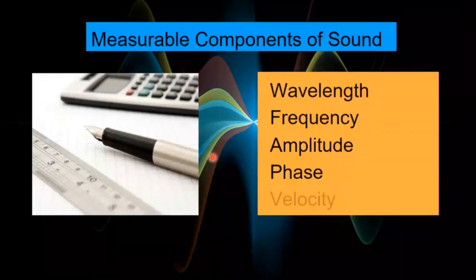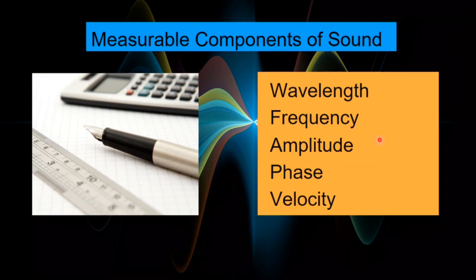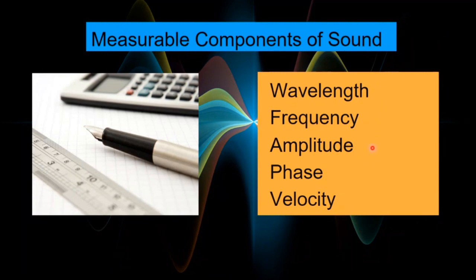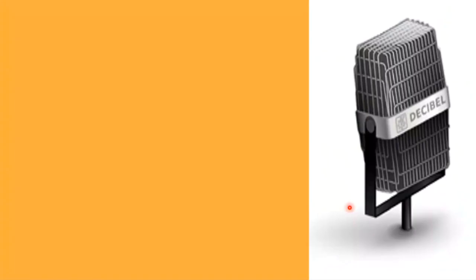So in summary, the measurable components of sound that we'll cover here. Wavelength, the distance from peak to peak or trough to trough. Frequency, the number of cycles per second. Amplitude, the loudness or the height of the wave. Phase, the interaction of two or more sound waves. And velocity, the speed of the sound. Okay, those are what you should be familiar with in the context of music technology and sound.